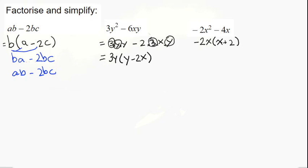So we have gone back to what we had before. This one, let's see: 3y times y, that's 3y². And 3y times negative 2, that's negative 6xy. And we got back to what we had before. Here, same thing: negative 2x times x, negative 2x². Negative 2x times 2, negative 4x.